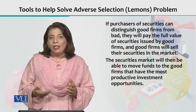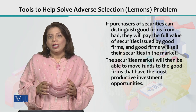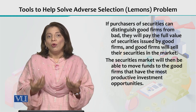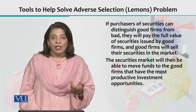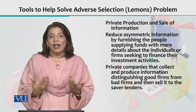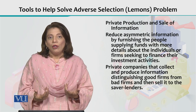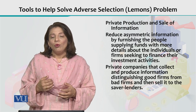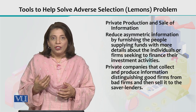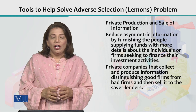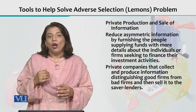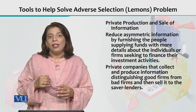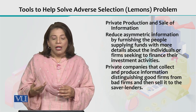A good firm is one that is expected to yield more profit. Eventually, if I am more informed about the overall working of a firm, I will be able to make better decisions. This is one way through which I can avoid adverse selection, or avoid ending up investing in a lemon.